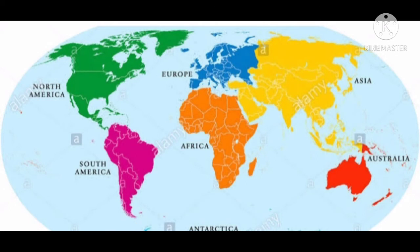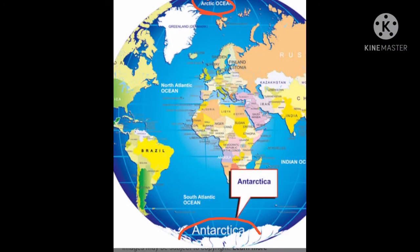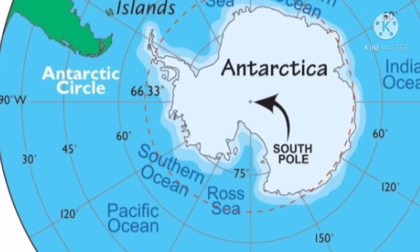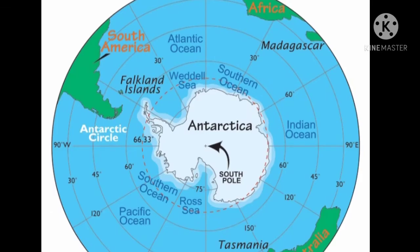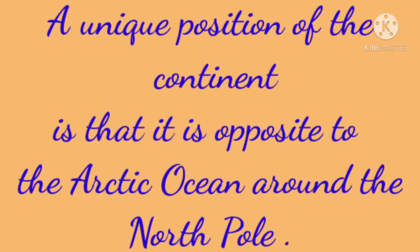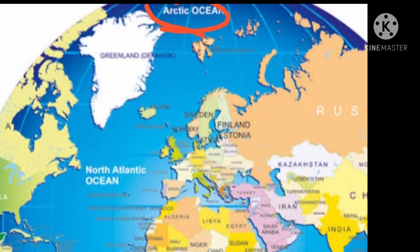First, we shall learn about the location of Antarctica. As you have all seen on the globe, Antarctica is the continent which surrounds the South Pole. It is exactly at the South Pole, that is 90 degree latitude and zero degree longitude. Antarctica lies within the Antarctic Circle. A unique position of the continent is that it is opposite to the Arctic Ocean around the North Pole.